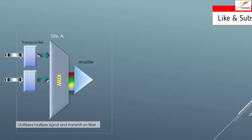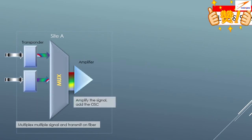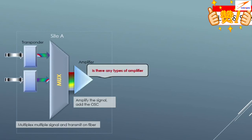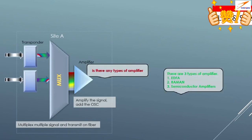After the multiplexer, the signal goes to amplifiers. An amplifier's job is to amplify the signal and add the OSC — optical supervisory channel. Placement of an amplifier is not always mandatory; it depends on your site distance or span loss, but we consider the amplifier as a building block of the DWDM network. There are three types of amplifiers: EDFA (erbium-doped fiber amplifier), Raman amplifier, and semiconductor optical amplifier. In most DWDM networks, EDFA and Raman are deployed.